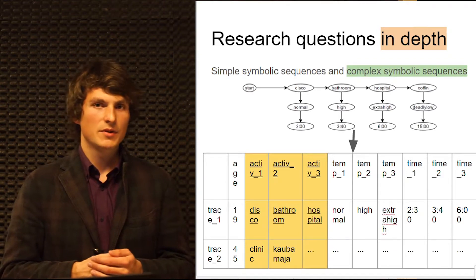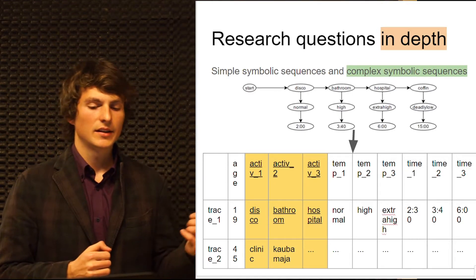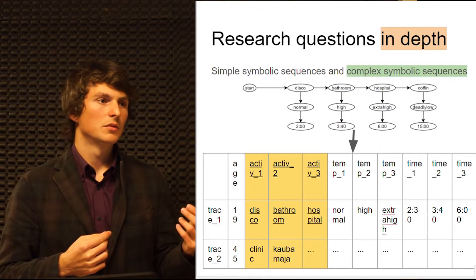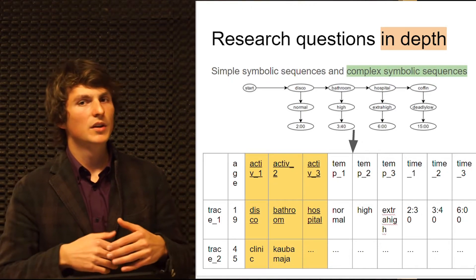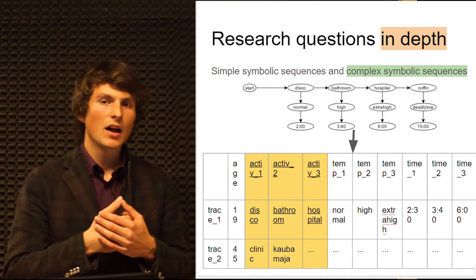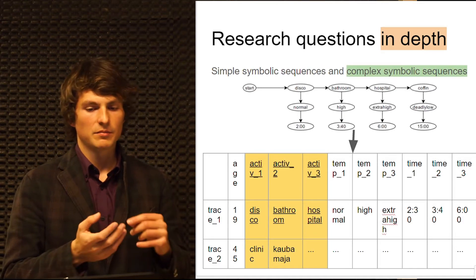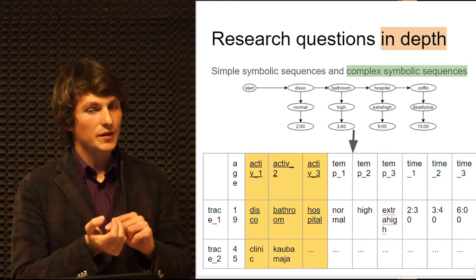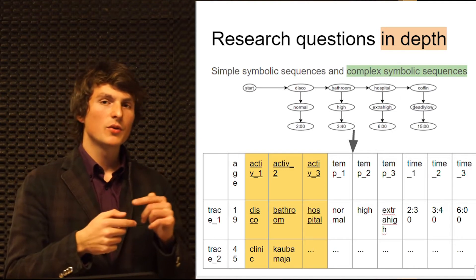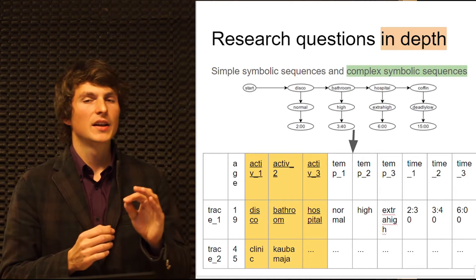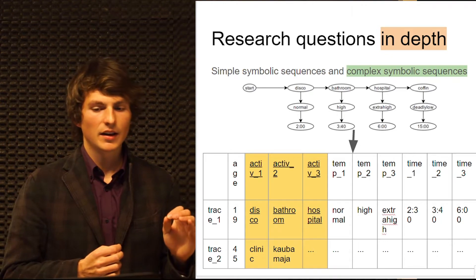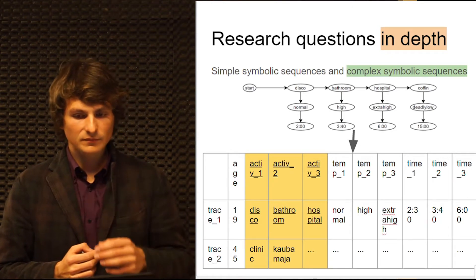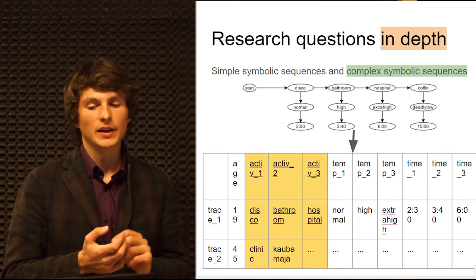Complex symbolic sequences, on the other hand, allow us to encode almost all information possible — for example, age. Then we encode the sequences sequentially, so the program can know that these are sequences, unlike with simple symbolic sequences. Also, we encode payload and everything.